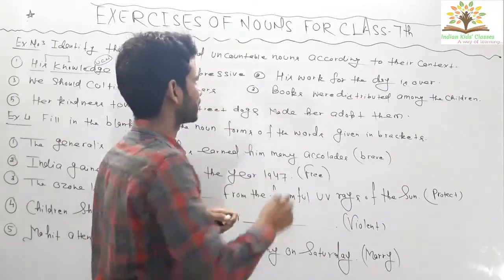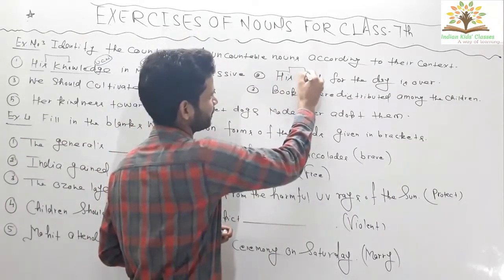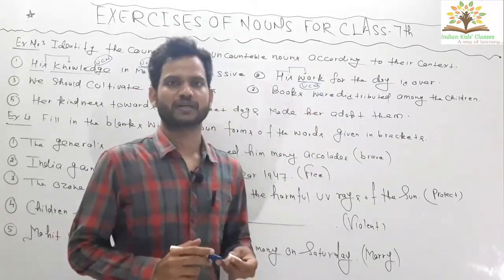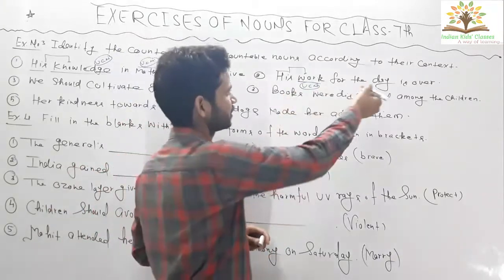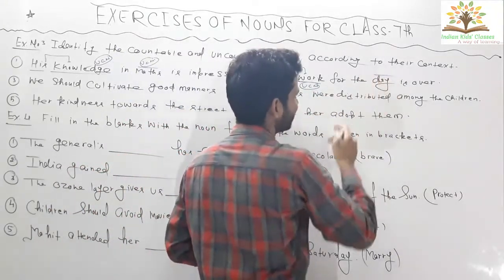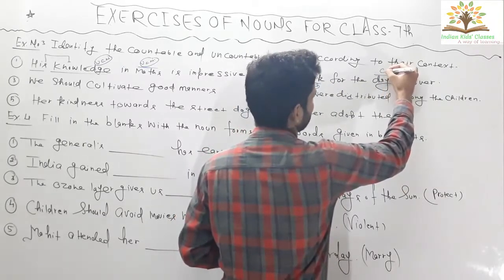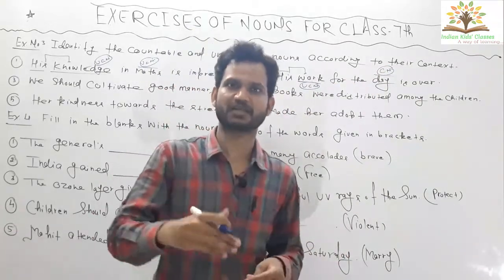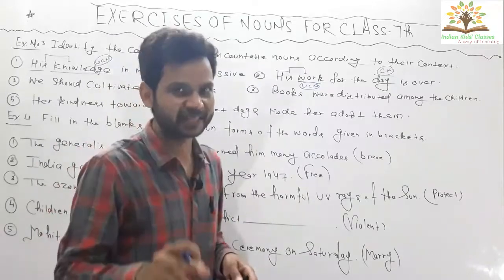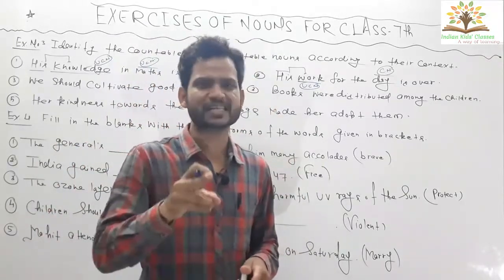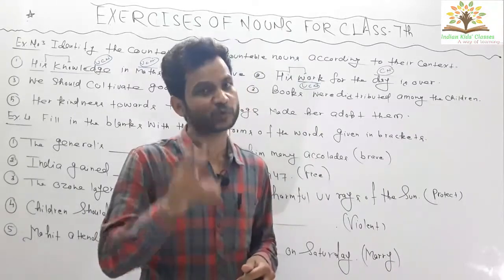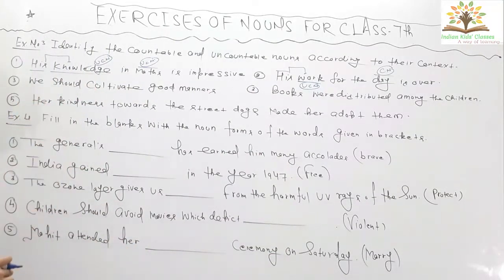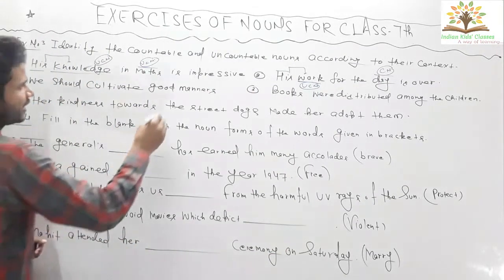Question two: 'His work for the day is over.' Work is an uncountable noun — we cannot count work. Day is a countable noun — it is very simple and also a common noun. Day, days, year, years, month, months — these are all countable nouns. If a noun is countable, you can write it in plural form.